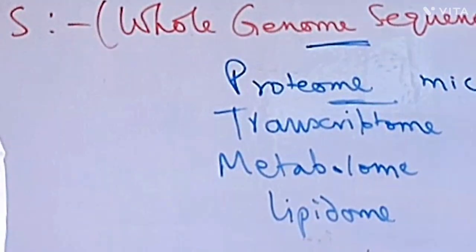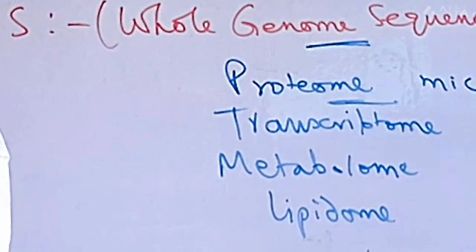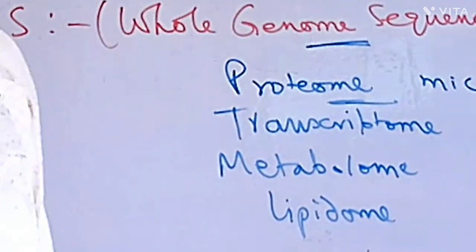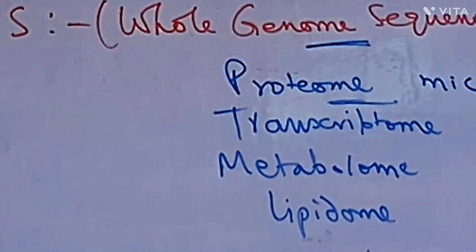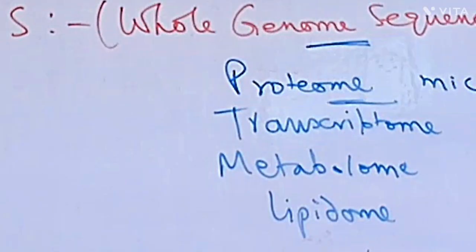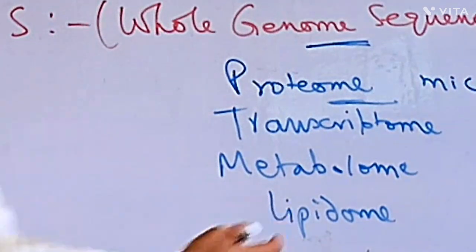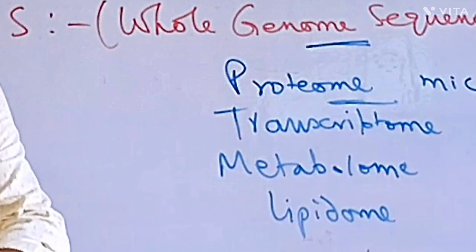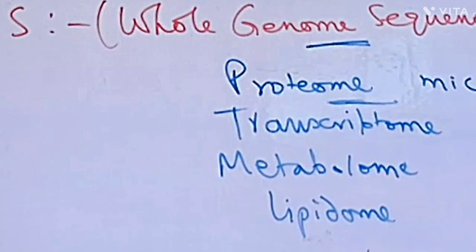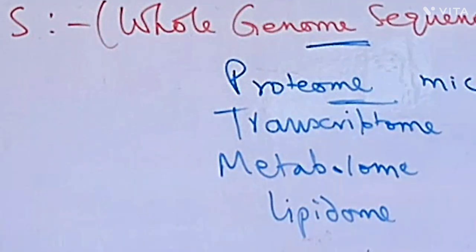Study of the total transcript — the total transcript is called the Transcriptome, and the study of that is called Transcriptomics. Study of the total metabolite: our total metabolites form the Metabolome, and that is called Metabolomics. Lipidomics means study of the total lipid. You can use O-M-E as a suffix anywhere — it conveys that you are studying the totality of that particular entity.